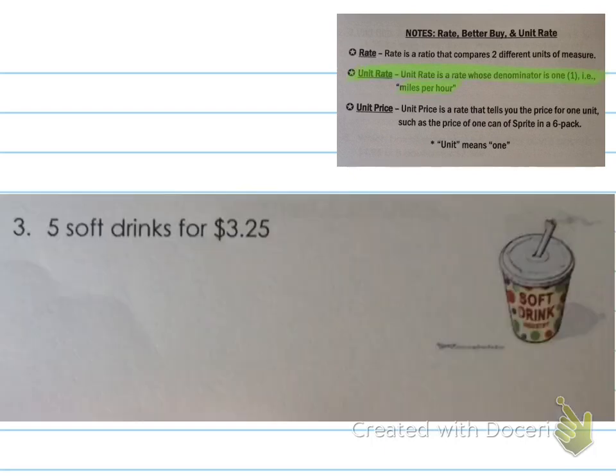Five soft drinks for $3.25. Well, what's going to make the most sense here? Are we going to try to find out how many drinks we can get for $1? Or how many dollars it is per drink? It makes the most sense to figure out how much it's going to cost for one drink. So that means I'm actually going to be putting the $3.25 up top. And five drinks on the bottom. Because I want to know how much it will cost for one drink. And so we want the one as our denominator.